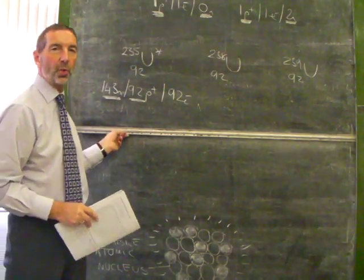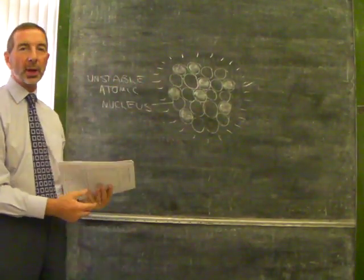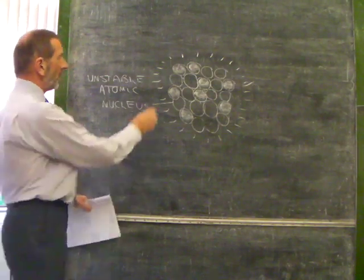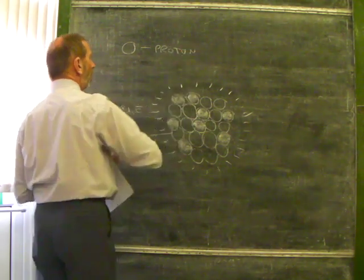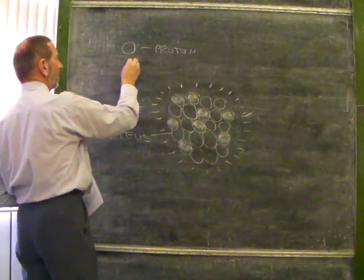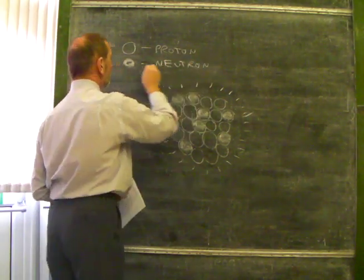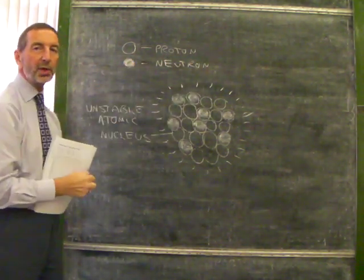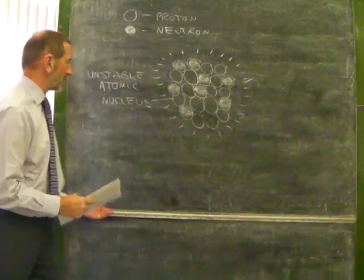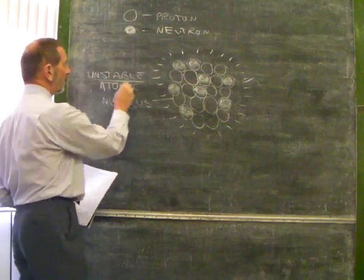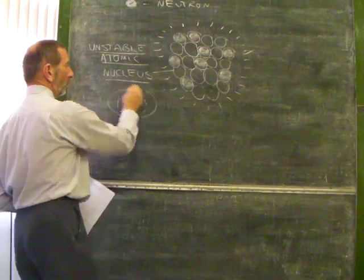Now, when an atom emits radiation, what's actually happening? This diagram is supposed to represent the nucleus of an atom. The circles represent either proton or neutron. And as it's already established, certain combinations of protons and neutrons are unstable. Let's say this one is unstable. This is an unstable atomic nucleus because of its proton-neutron ratio.